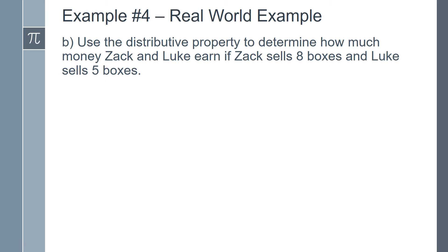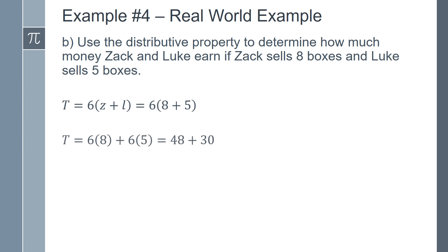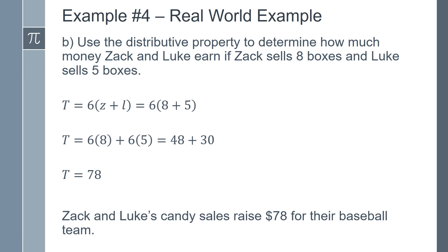For the next part of this example, we will use the distributive property to determine how much money Zach and Luke earn if Zach sells 8 boxes and Luke sells 5 boxes of candy. So t equals 6 times (z plus l) becomes 6 times (8 plus 5). Using the distributive property, we find 6 times 8 plus 6 times 5, which equals 48 plus 30. 48 plus 30 equals 78, so Zach and Luke's candy sales raise $78 for their baseball team.